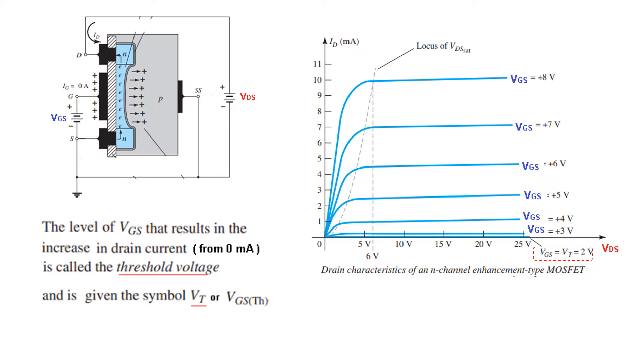Like in this example you can see, VGS, this line, the upper line is of 3 volts and the lower line is of 2 volts. The moment 2 volts has been applied at the gate, some current, very minimal current but current has started flowing in the line. So this 2 volts will be called the threshold voltage. So read again: the level of VGS that results in the increase in drain current from 0 mA is called the threshold voltage, and it is given by the symbol VT or VGS(th).